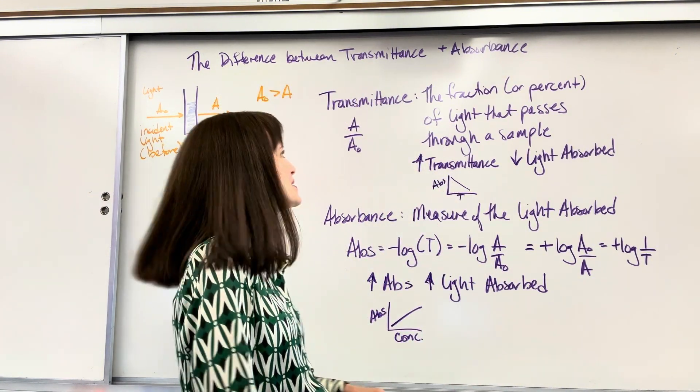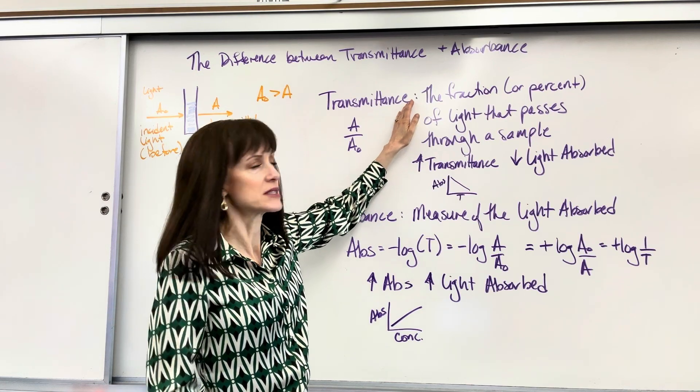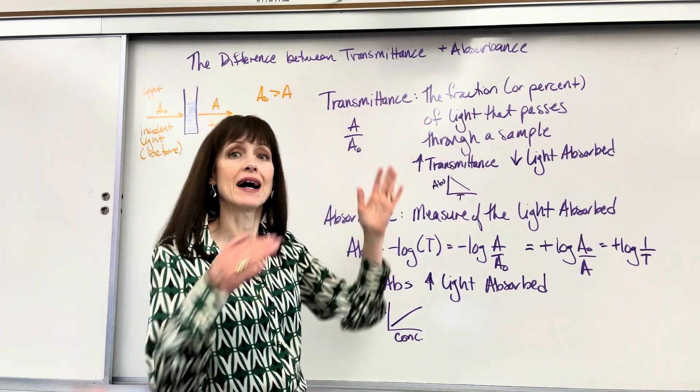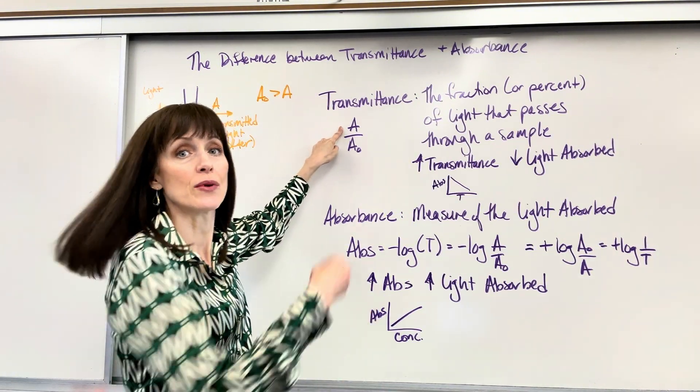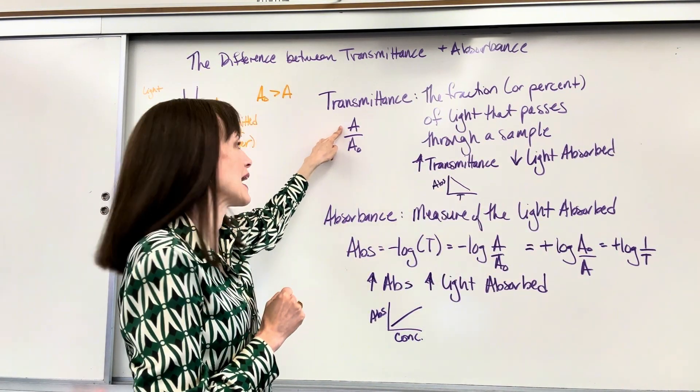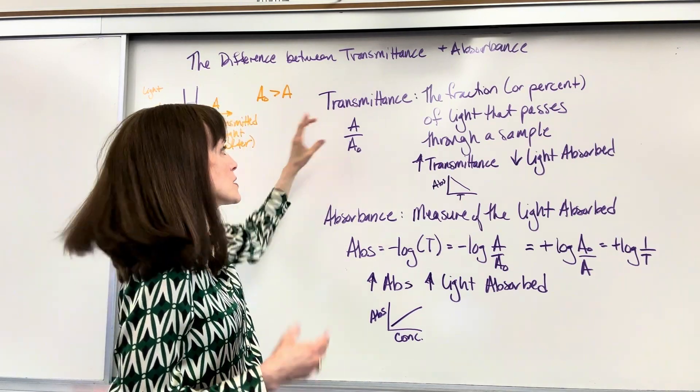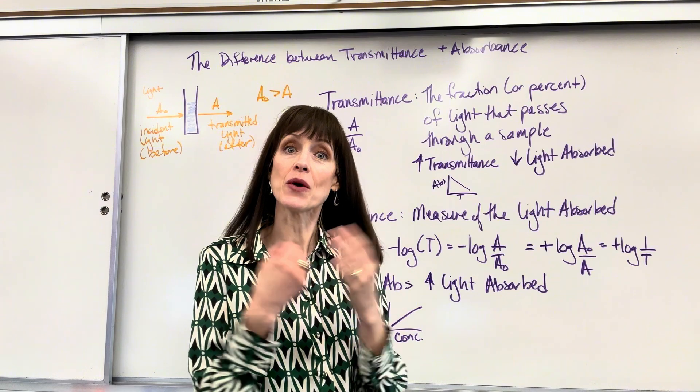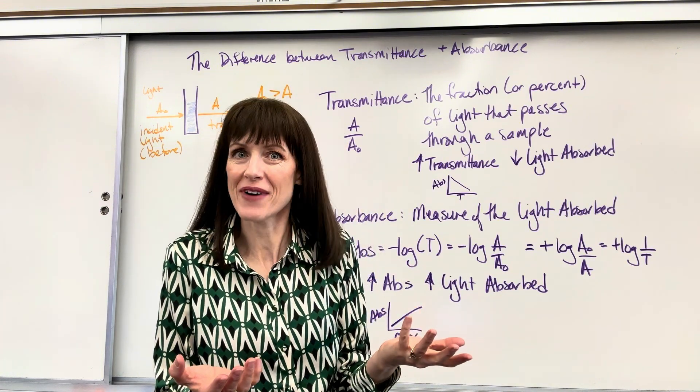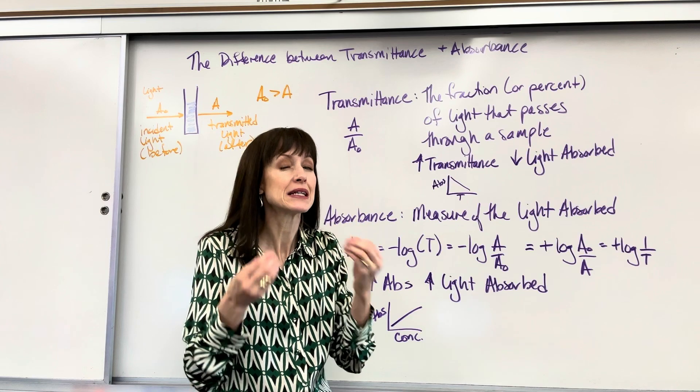Now the difference between the two. So transmittance, this is the fraction or you can do it as a percent of light that passes through the sample. So really easily, it's just the light that we have at the end, the transmitted light, divided by the incident light, the original light. What's the percentage left over? Did half of that energy, half of that light, was it absorbed? That would be 0.5 or 50 percent.